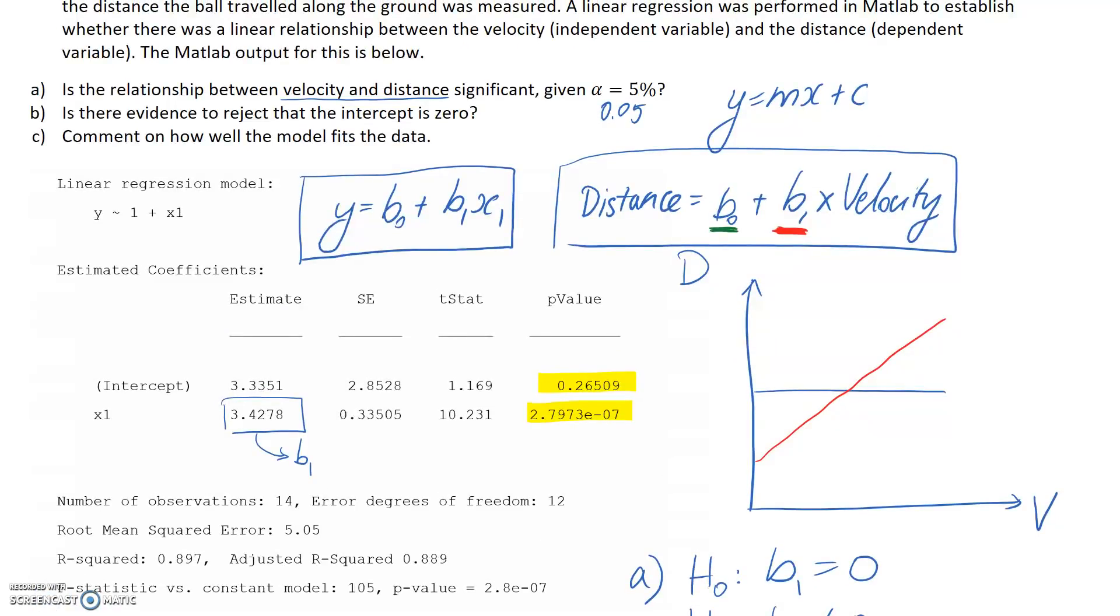So the last bit here is part C. We need to comment on how well the model fits the data. So the main value that we're looking for in our output is this r-squared value. So we can see down here, it's 0.897.